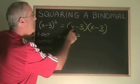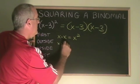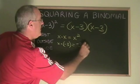The outside terms are the x and the negative 3. x times negative 3 is -3x.